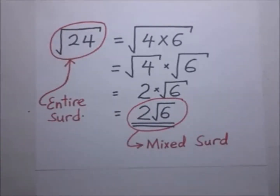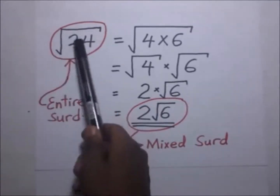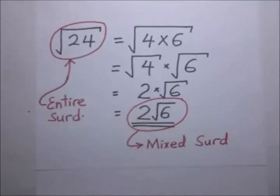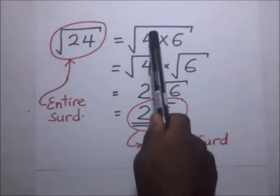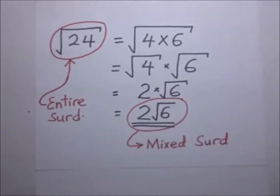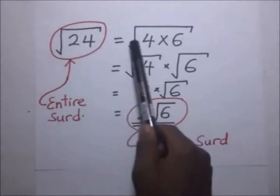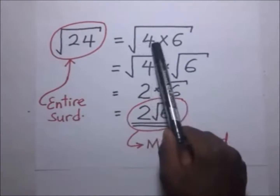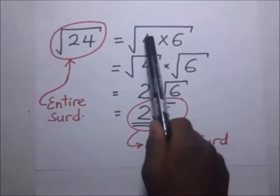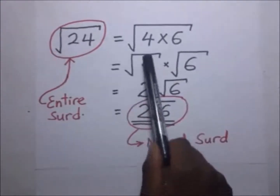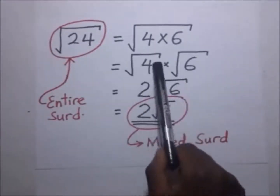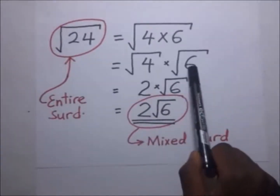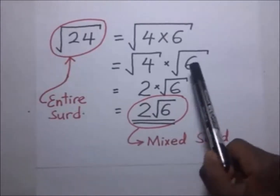We choose two factors where one of them has a known direct square root. For 24, we choose 4 and 6, since 4×6=24. The square root of 4×6 becomes the square root of 4 times the square root of 6. The square root of 4 is 2, but the square root of 6 is an irrational number, so we leave it in surd form.